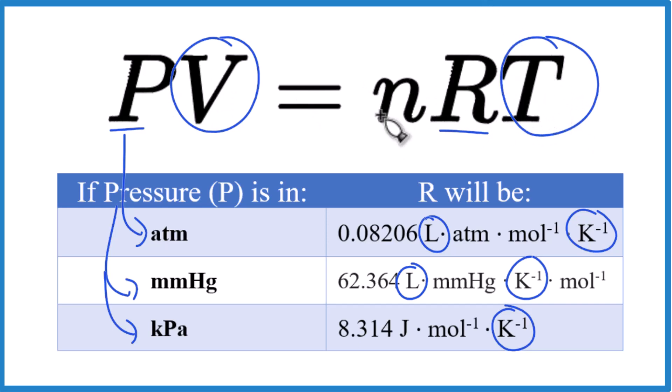So in answer to our question, when you're doing the ideal gas law, volume needs to be in liters, temperature needs to be in Kelvin. If you need help converting those units, there is a link in the description of this video.